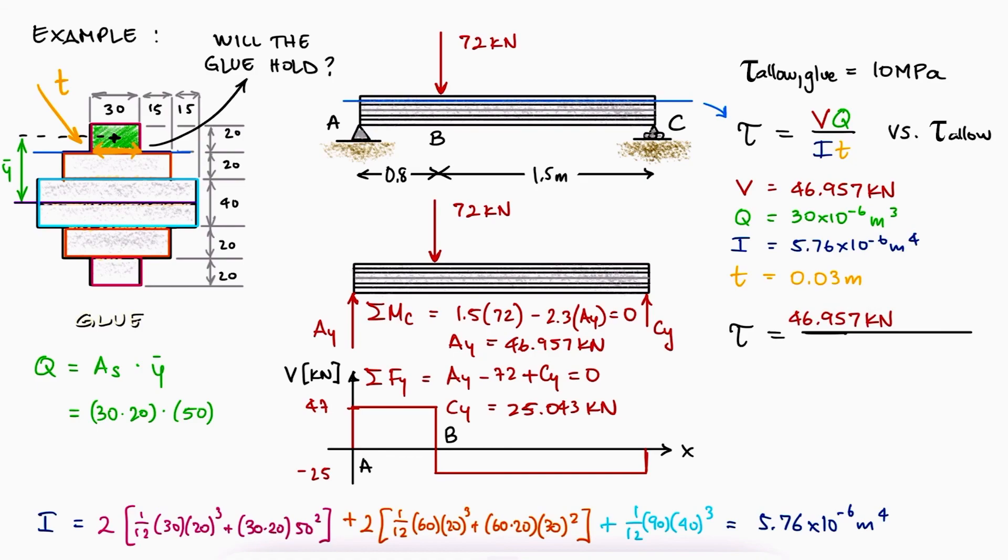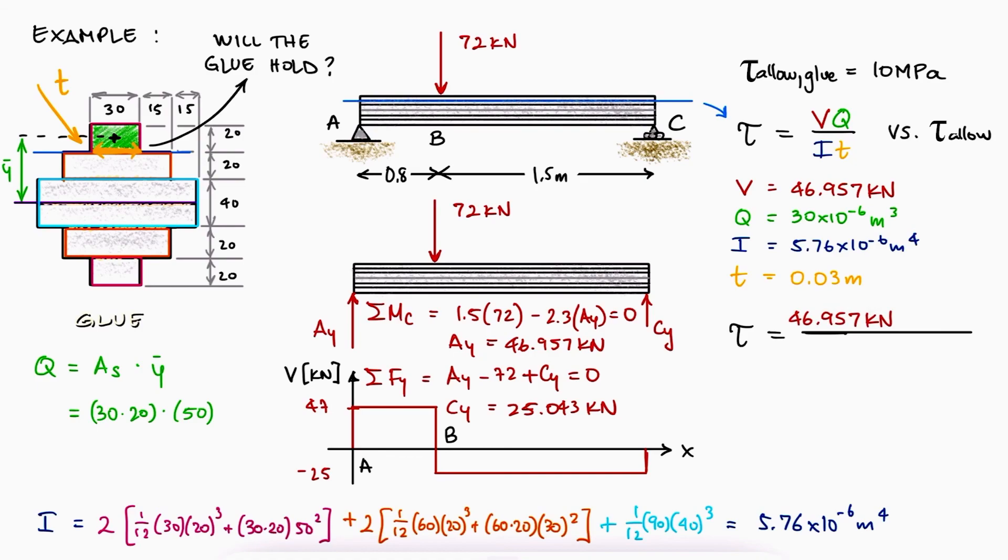Since this value is lower than the maximum allowable stress that the glue can resist, we can conclude that the glue will in fact hold the top plank together with the rest of the beam, when the beam is subjected to that external 72 kilonewton load.